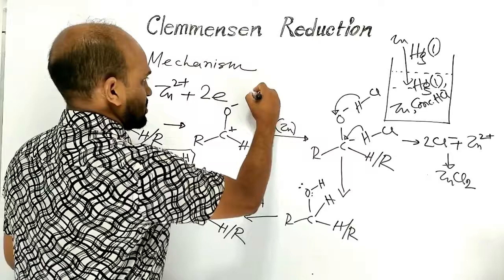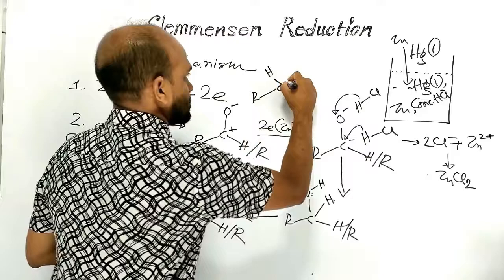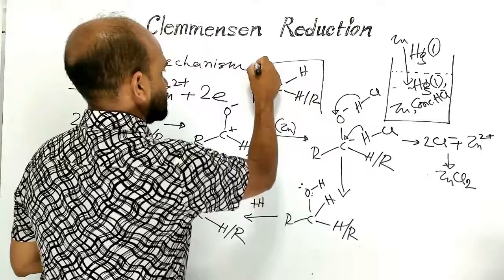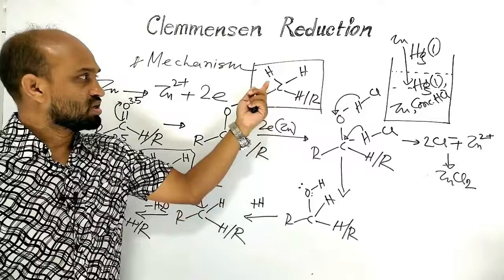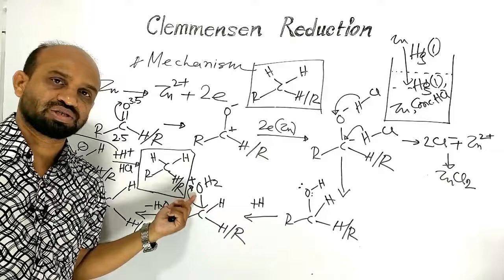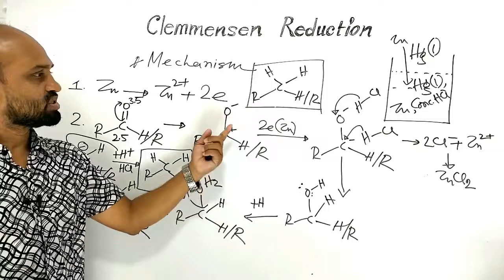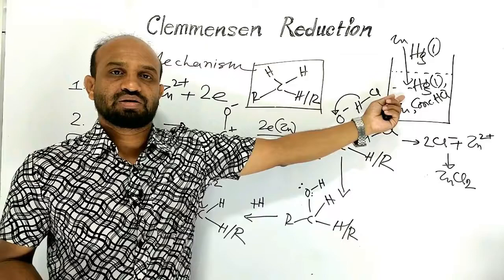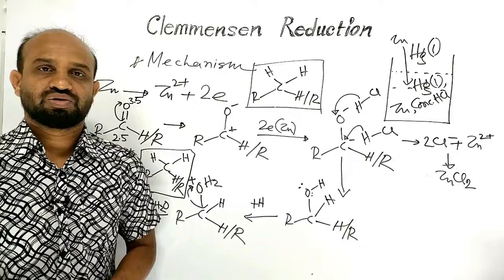The final product is a hydrocarbon — an alkane is produced through reduction. Addition of hydrogen is reduction, and removal of oxygen is also reduction. This happens with the help of Clemmensen's reagent, that is, zinc amalgam and concentrated hydrochloric acid.